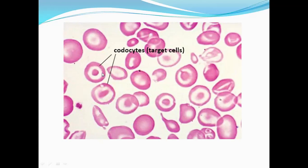Another important area is the reticulocyte count. Today they gave a picture of reticulocyte count. Reticulocytes are red blood cells with RNA remnants. During RBC formation, it starts with erythroblast — early erythroblast, intermediate erythroblast, late erythroblast, nucleated red blood cell, then reticulocyte, then RBC. Reticulocyte count is used to screen hemolytic conditions. In hemolytic anemia, the reticulocyte count increases.